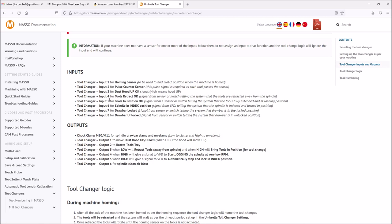You may also need to use input six if you're using spindle indexing, input seven and eight for the drawbar being locked and unlocked. But for what I am wiring up for this particular tool changer, the only items we'll be using are the home sensor, the pulse counter, tool in position, and tool retracted. And the output we'll be using is output three to retract and extend the tools.